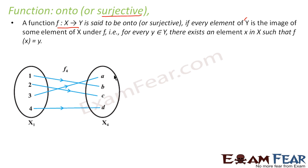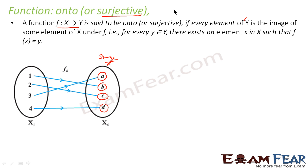For example, for this element there is an element in X, for this element there is an element, for C the element is 2, and for D there is also an element. There is no orphan element in the image — for every image you have one element in X.